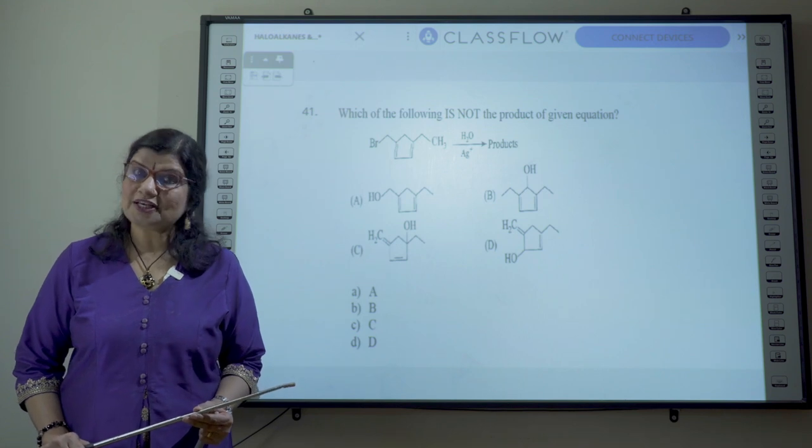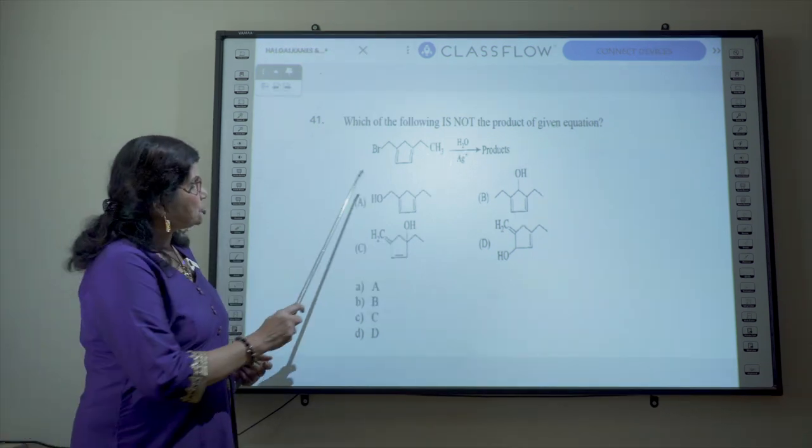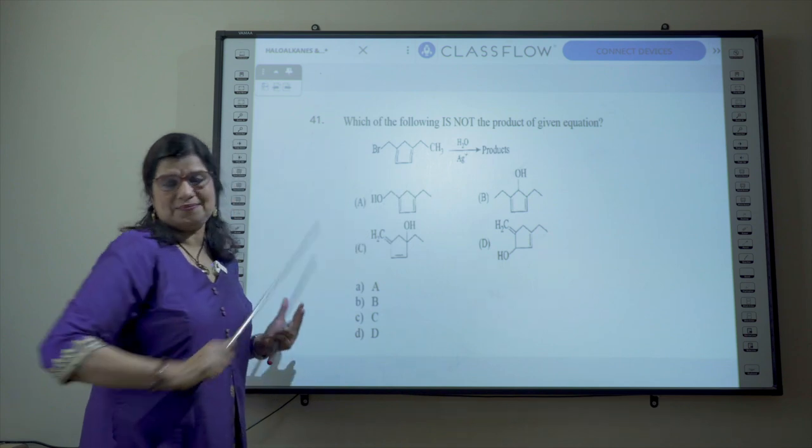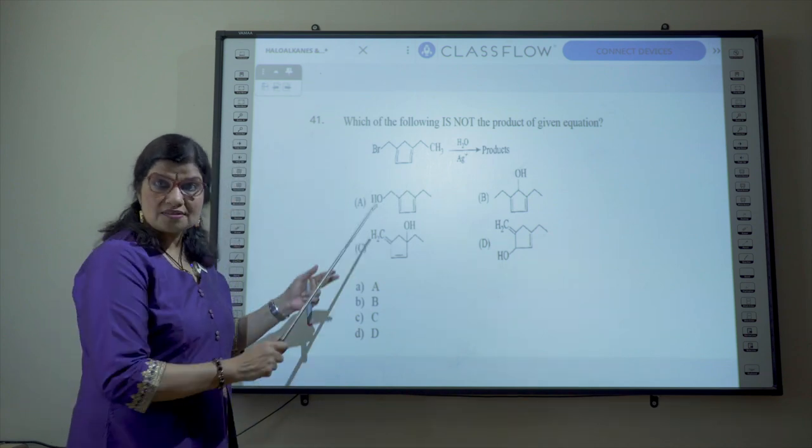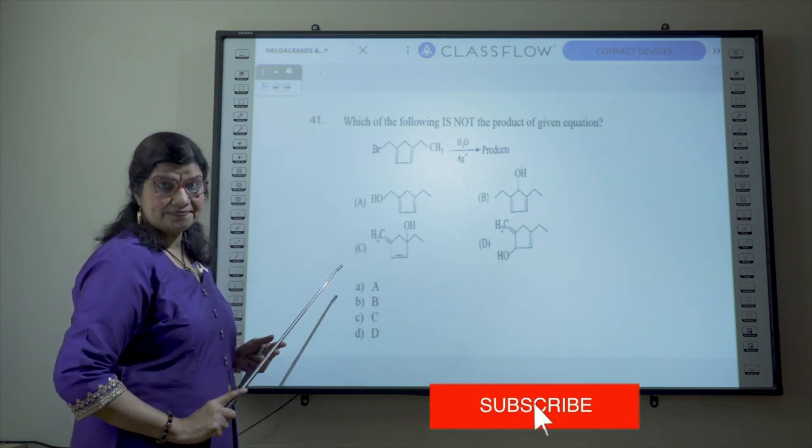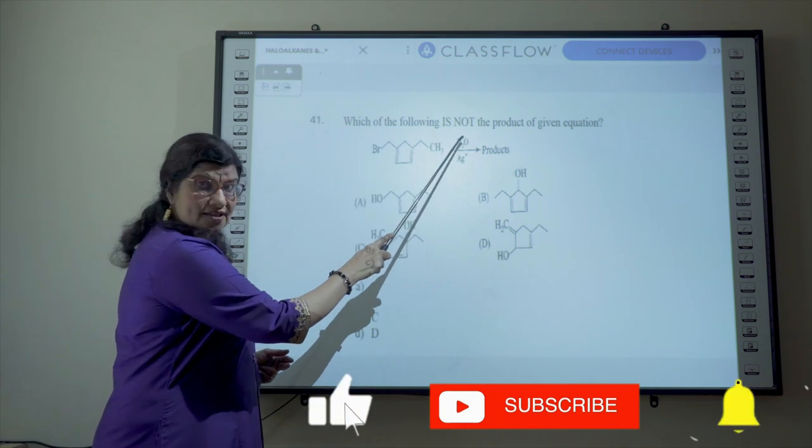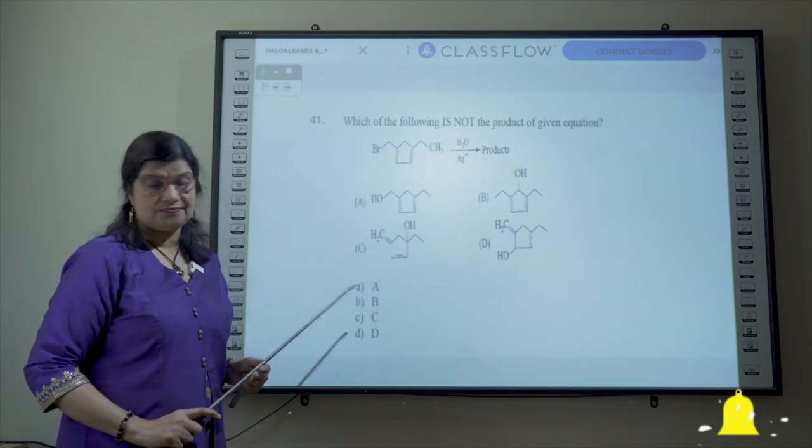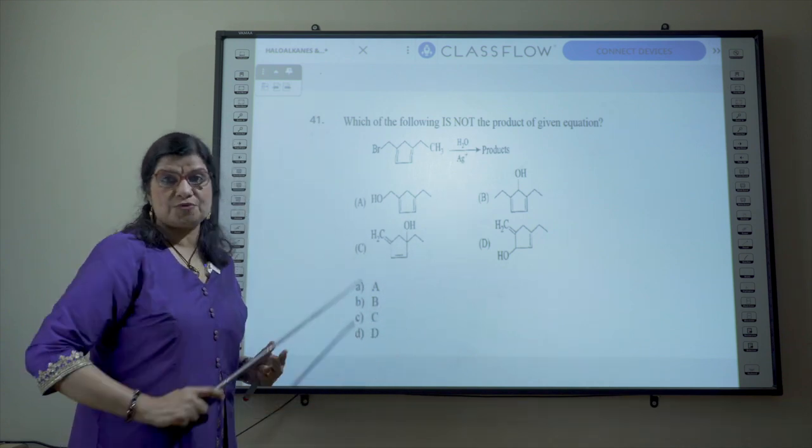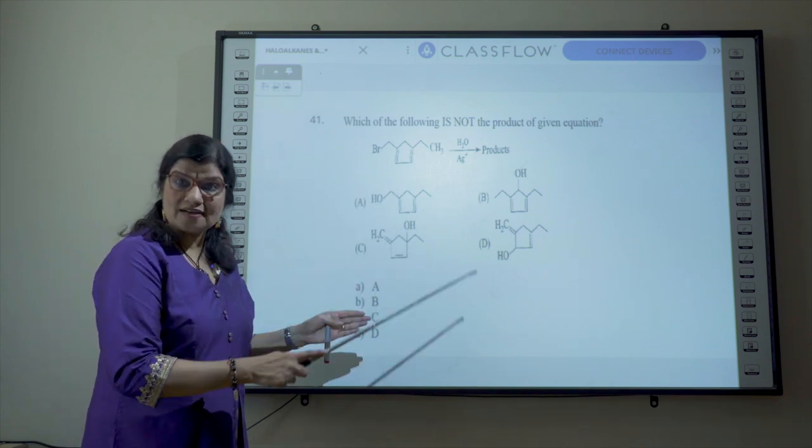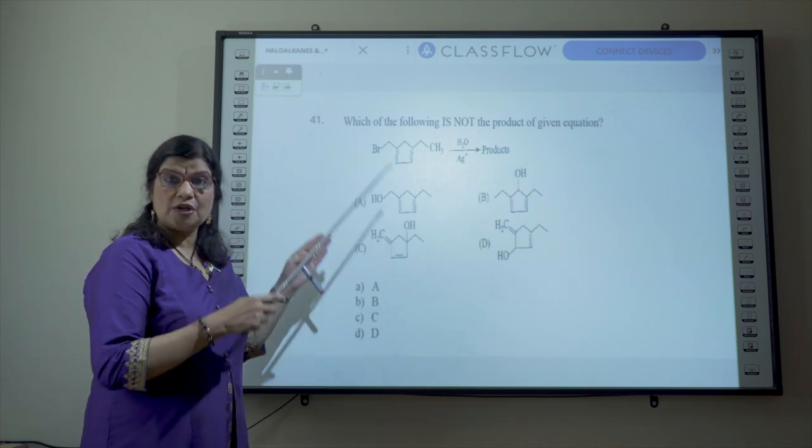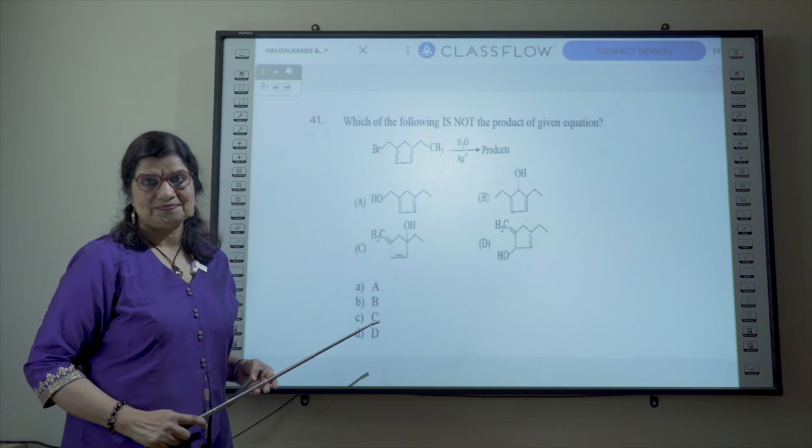You will see this question and its variations in many exams and understanding this will give you a definite advantage. Which of the following is not the product of the given equation? So what is the given equation? We have a substrate which is an alkyl halide subjected to hydrolysis in the presence of silver ions. Four options have been given A, B, C, D. Out of the four options three are relevant products of this reaction. You have to identify that product which will not be formed in this reaction.